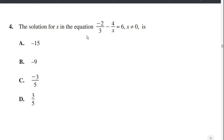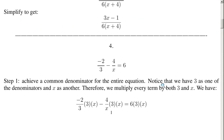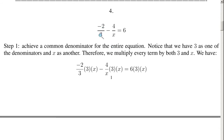The solution for x in the equation negative 2 over 3 minus 4 divided by x equals 6, where x is not equal to 0, is... Step 1: achieve a common denominator for the entire equation. Notice that we have 3 as one of the denominators and x as another. Therefore, we multiply every term by both 3 and x: negative 2/3 times 3x, minus 4/x times 3x, equals 6 times 3x.